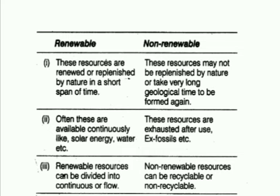The sources of energy which once used cannot be readily replenished are called non-renewable sources of energy. For example, coal and petroleum are two of the non-renewable sources of energy. There are some sources of energy which are freely available and can be repeatedly replenished — they are called renewable sources of energy. Solar energy, tidal energy, wind, and biomass are examples of renewable sources of energy.